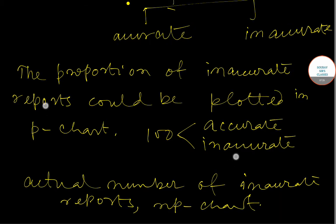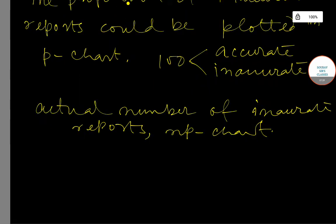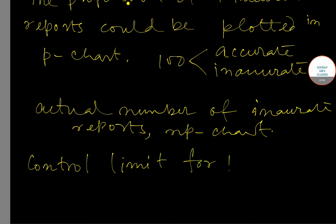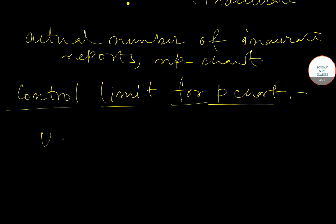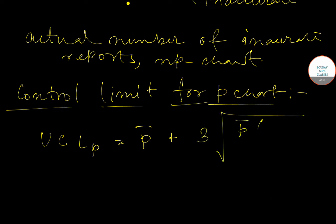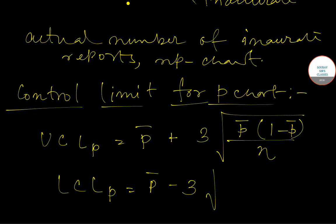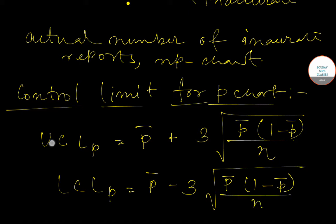Now we will discuss the control limits for P-chart. UCL_P equals P-bar plus 3 times the square root of P-bar multiplied by (1 minus P-bar) divided by N. And LCL_P equals P-bar minus 3 times the square root of P-bar multiplied by (1 minus P-bar) divided by N.